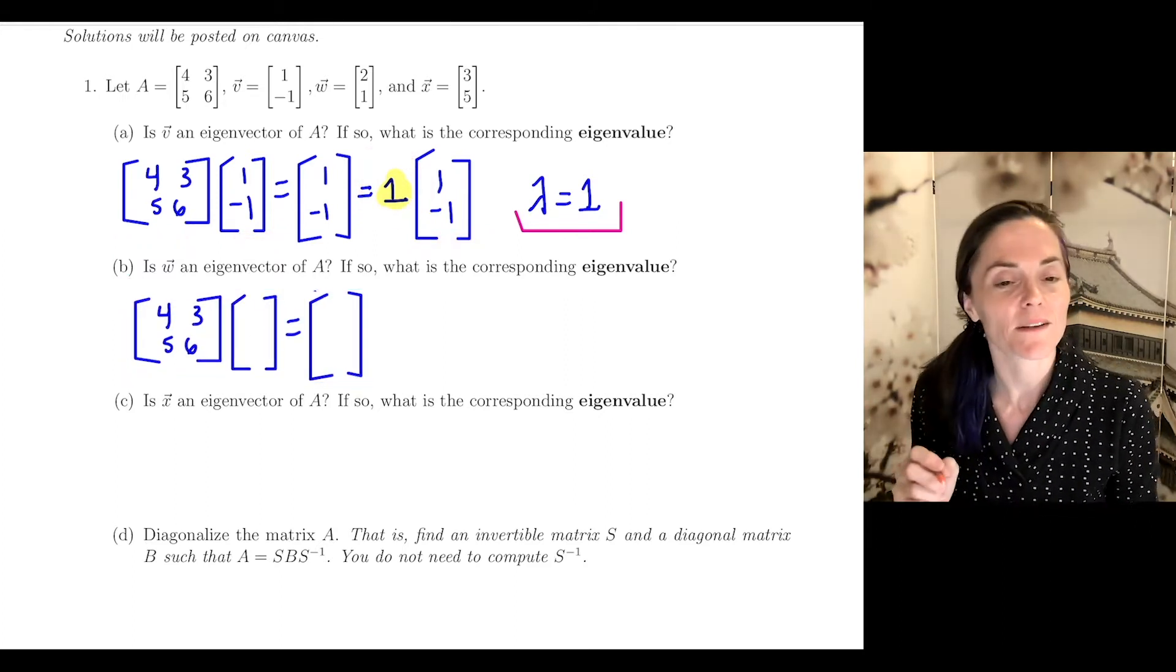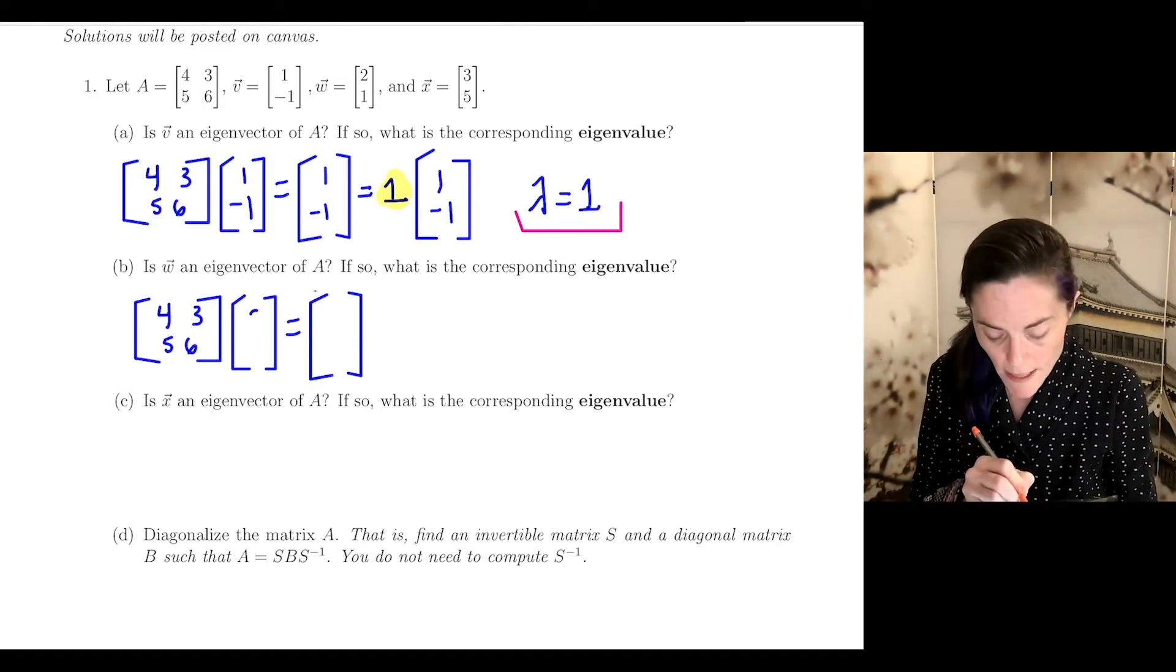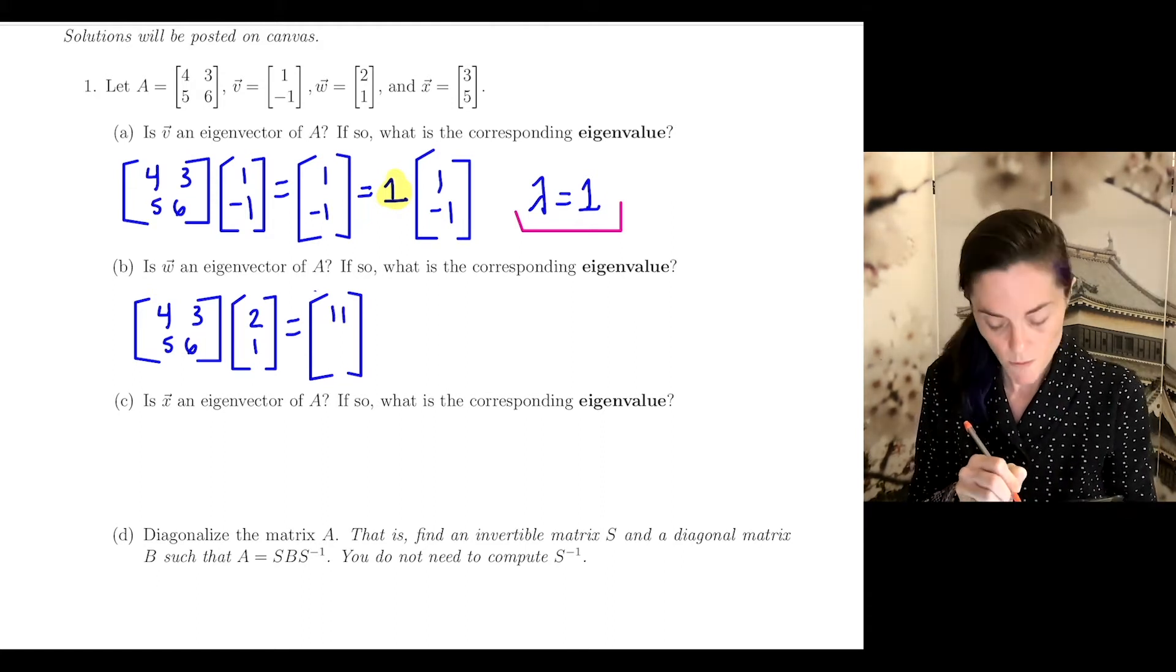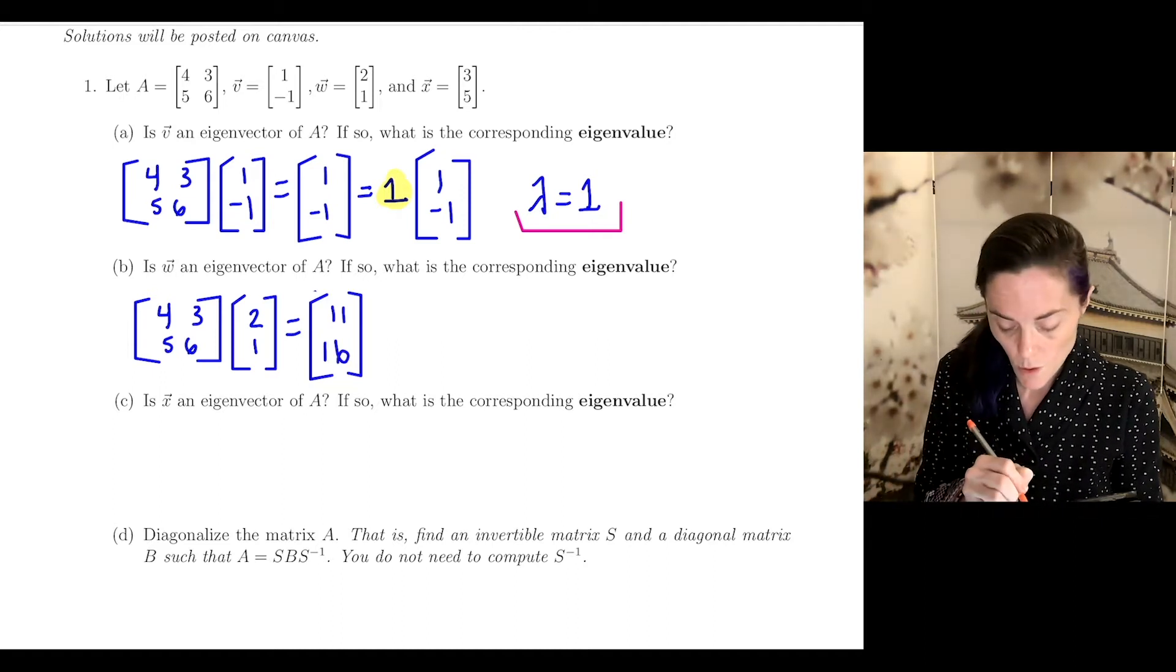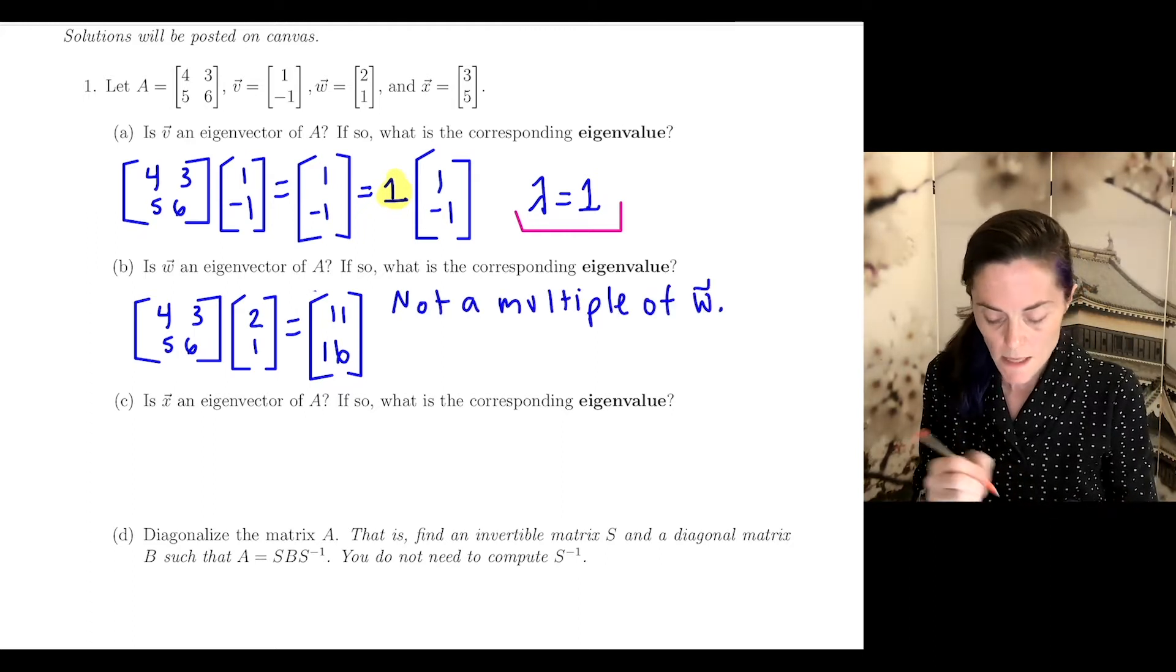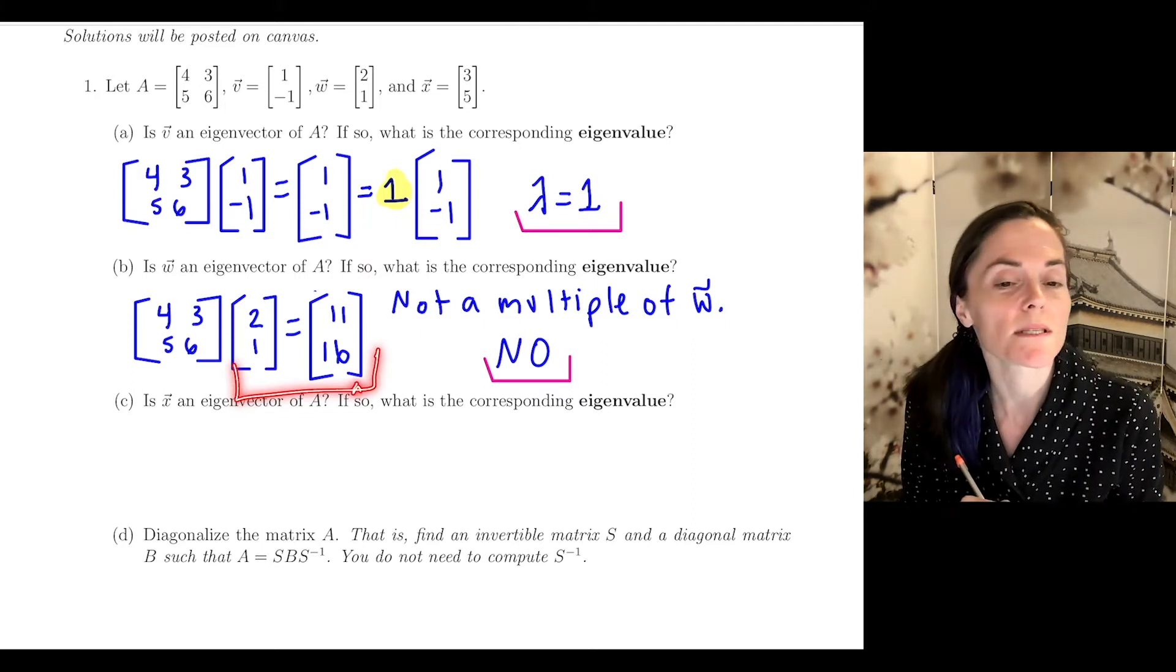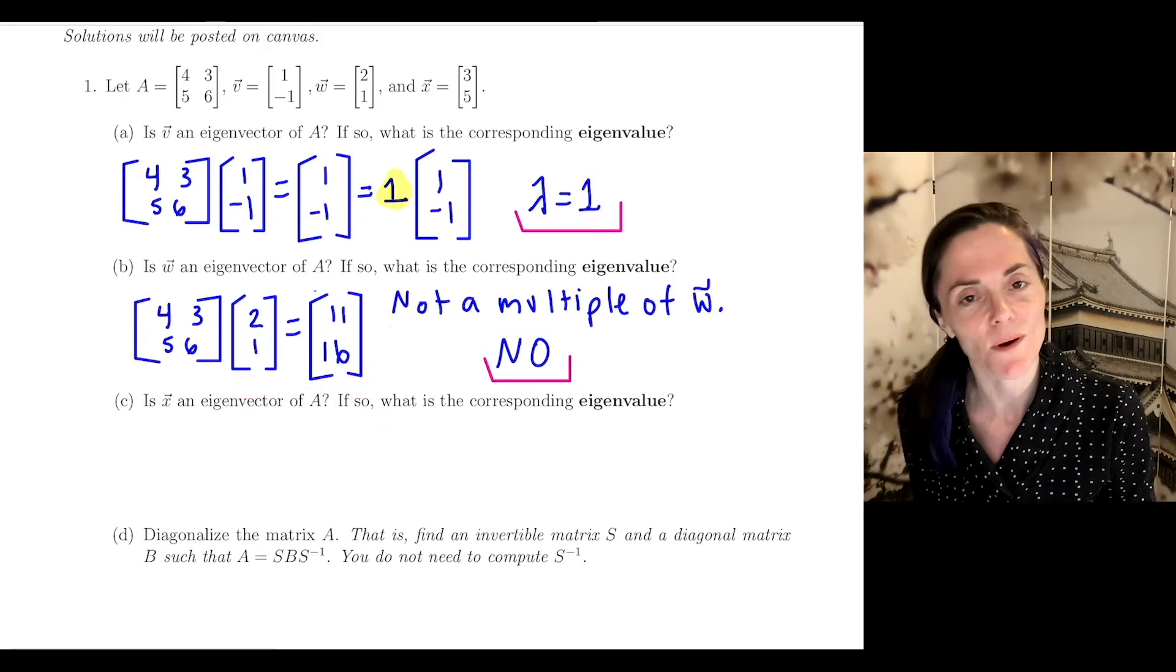Is W an eigenvector for A? It's a similar calculation. We calculate A times W. Here I get (8 + 3, 10 + 6), which is (11, 16). Is this a multiple of (2, 1)? No, this is not a multiple of (2, 1). So the answer here is no. The first coordinate would say the multiplier needs to be 11/2, and that certainly doesn't work with the second coordinate.